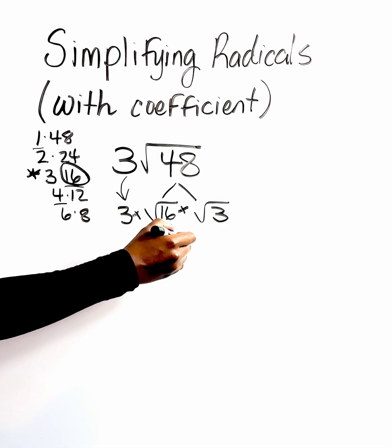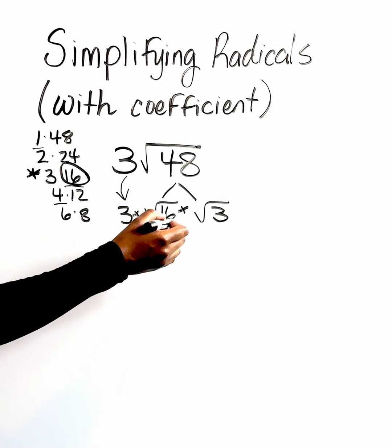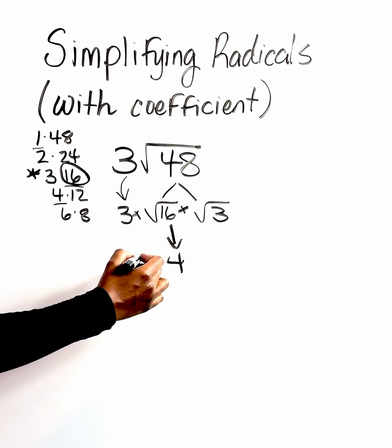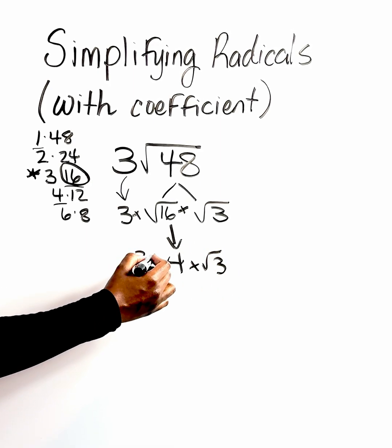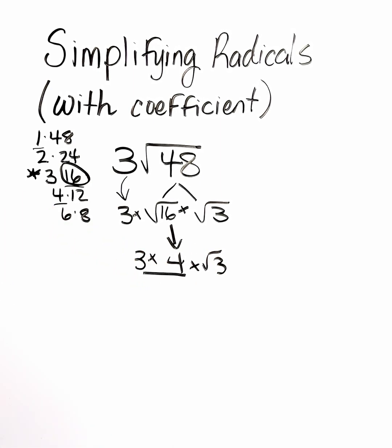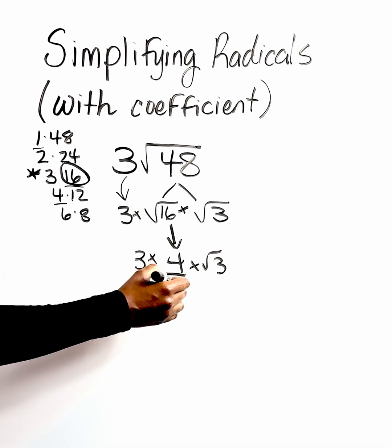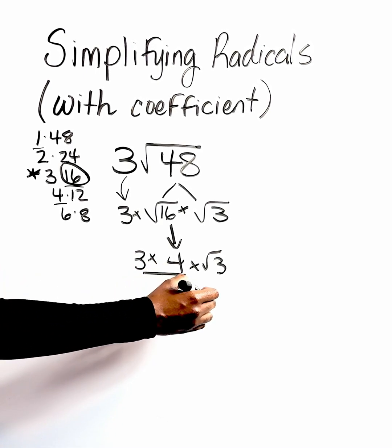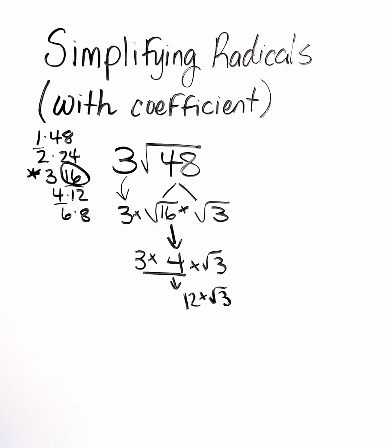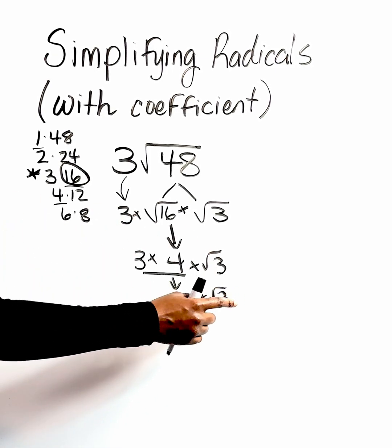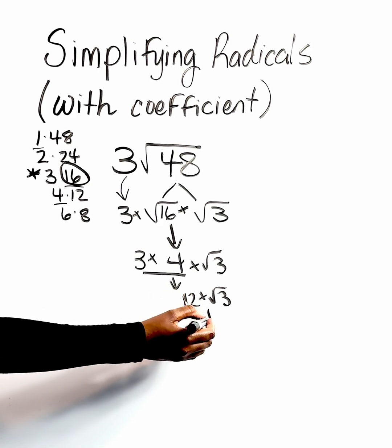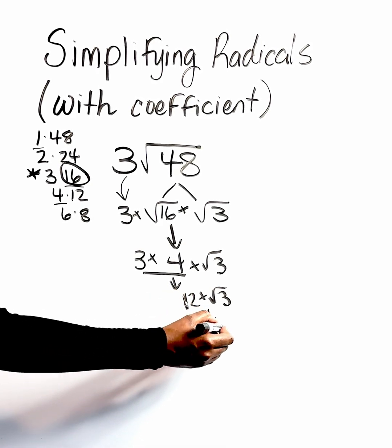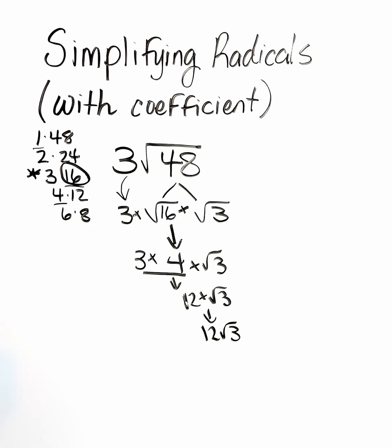And then from here, we're going to simplify. So simplify the perfect square root first. The square root of sixteen gives us four. We're going to bring everything else down. Then we're going to multiply the two values in the front. Three times four gives me twelve, which leaves us with twelve times the square root of three. And anytime I multiply a number times the radical, I just stick them together. So twelve times square root of three essentially is twelve root of three. That's it.